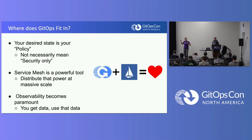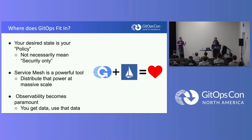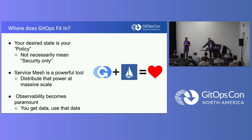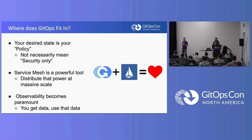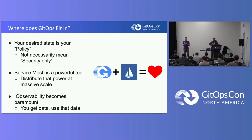GitOps and Istio work pretty well together, especially when managing large systems. Both Nick and I work with really large enterprises. Observability becomes paramount — especially with distributed systems and large enterprises that have thousands of applications across thousands of clusters. You get data with Service Mesh, and you have to use that data. Information is just processed data, and you need that information for policy enforcement.